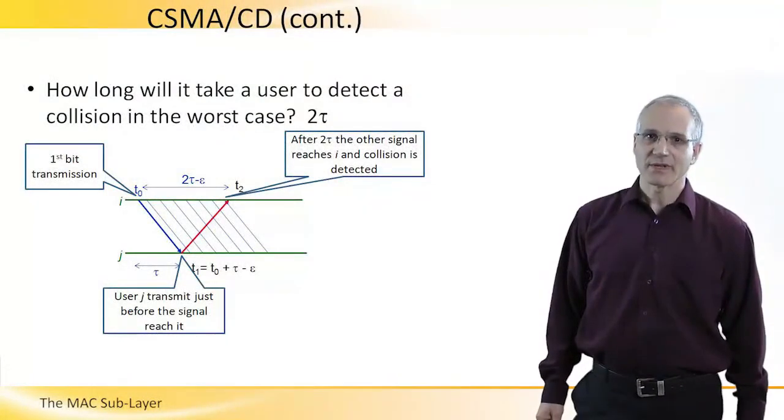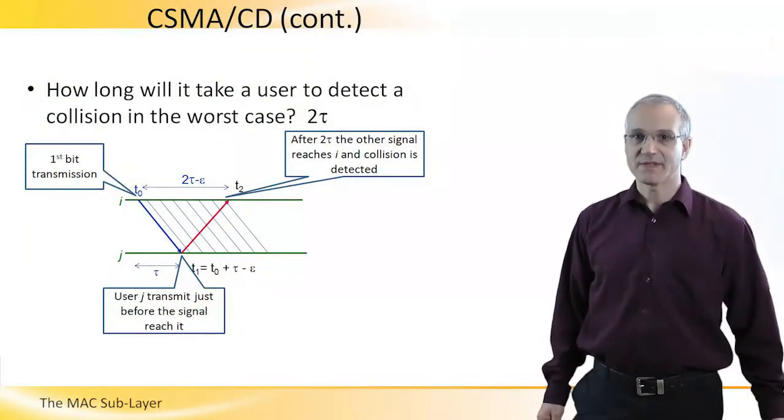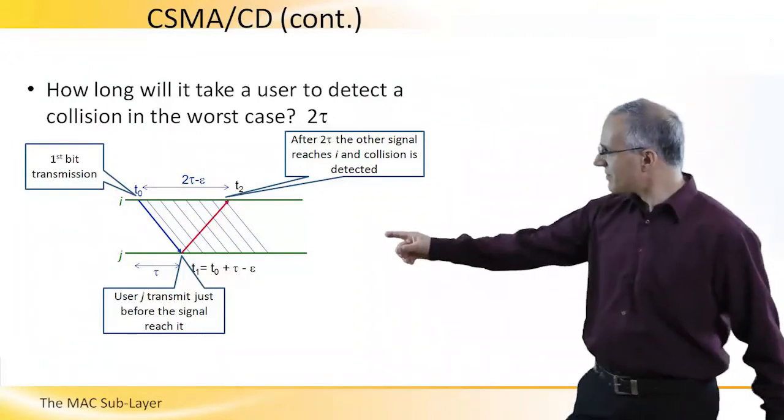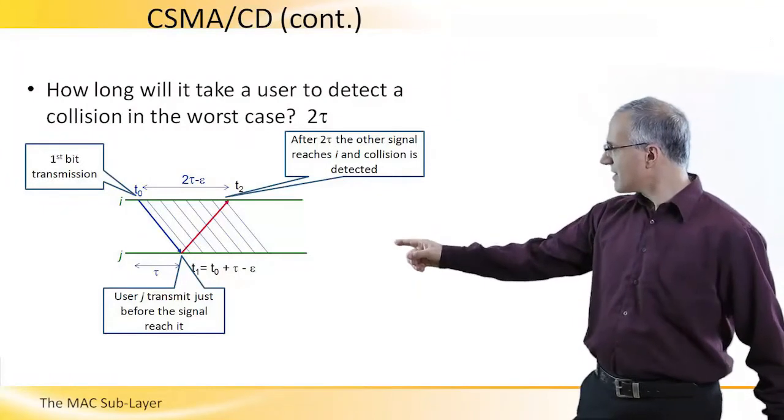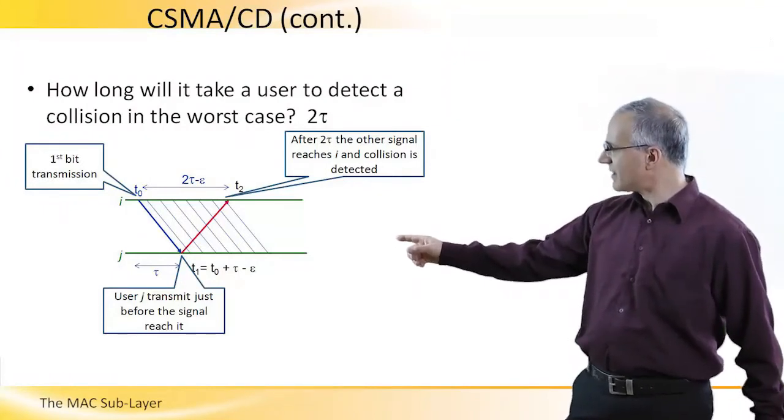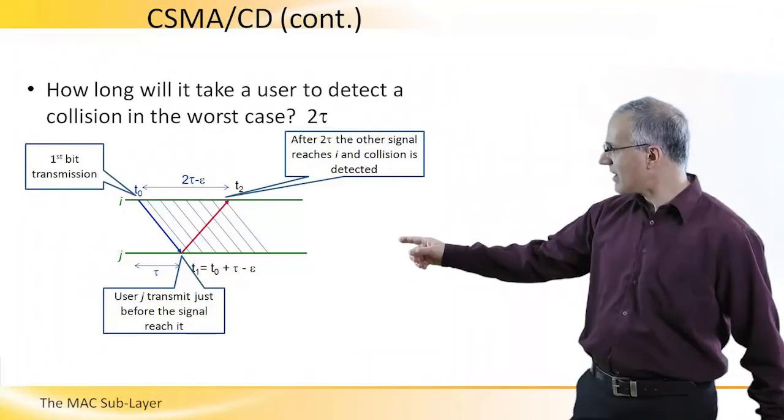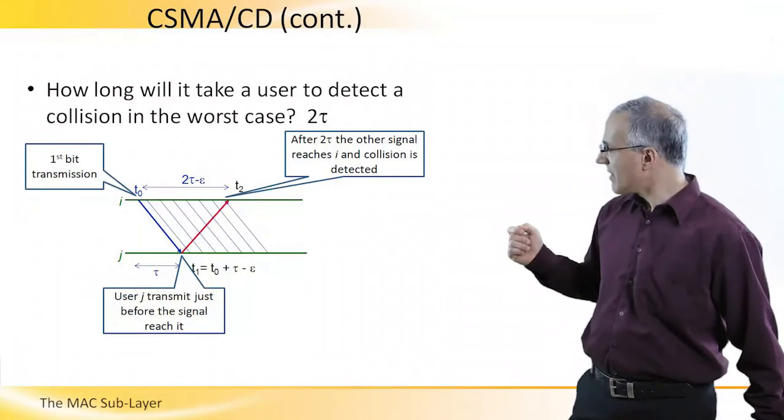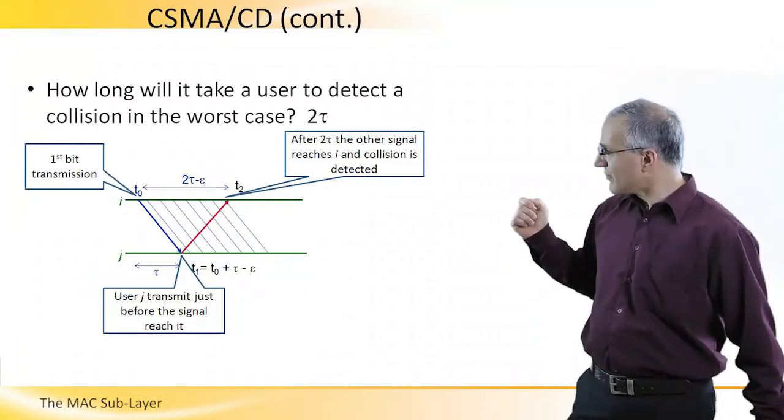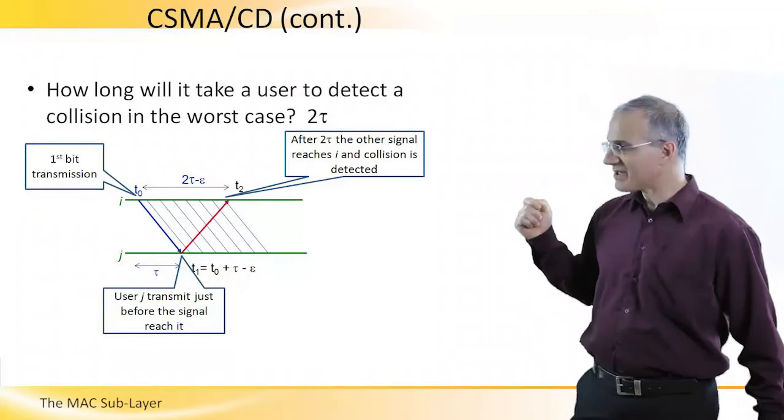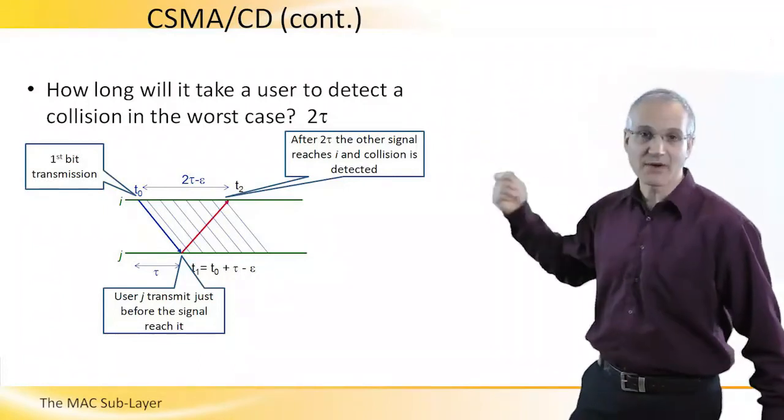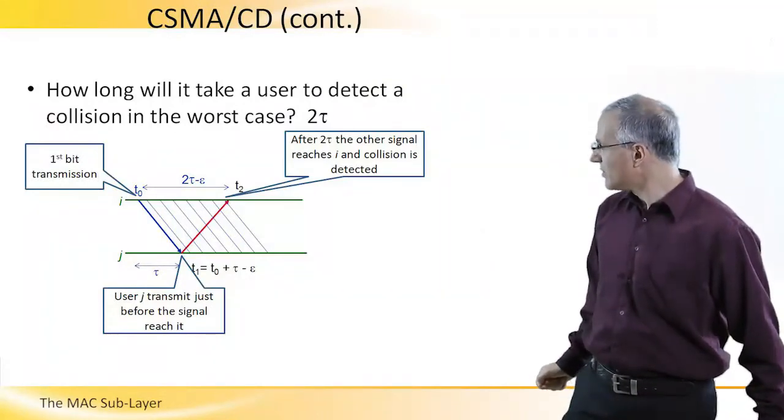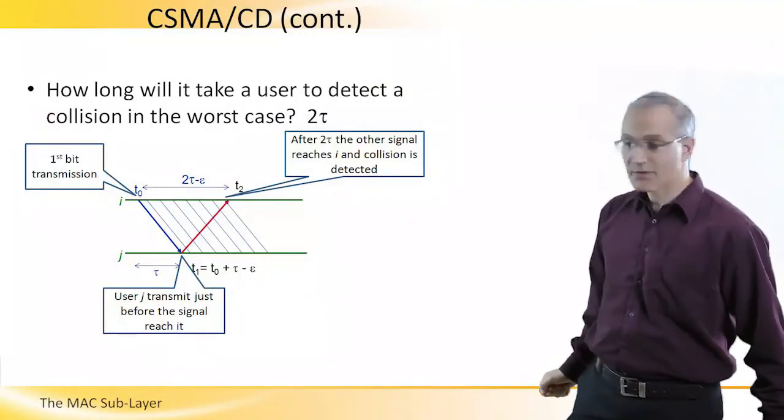So how long will it take a user to detect a collision in CSMA/CD in the worst case? We already showed that from the transmission of the first bit till the time it is received at the other end of the network, it can take up to tau time units. So a user can start transmitting just before this. However, for the first user to detect that somebody else is transmitting, we need to wait another tau unit for each signal to reach the first user. So all in all, we need to wait two tau units.